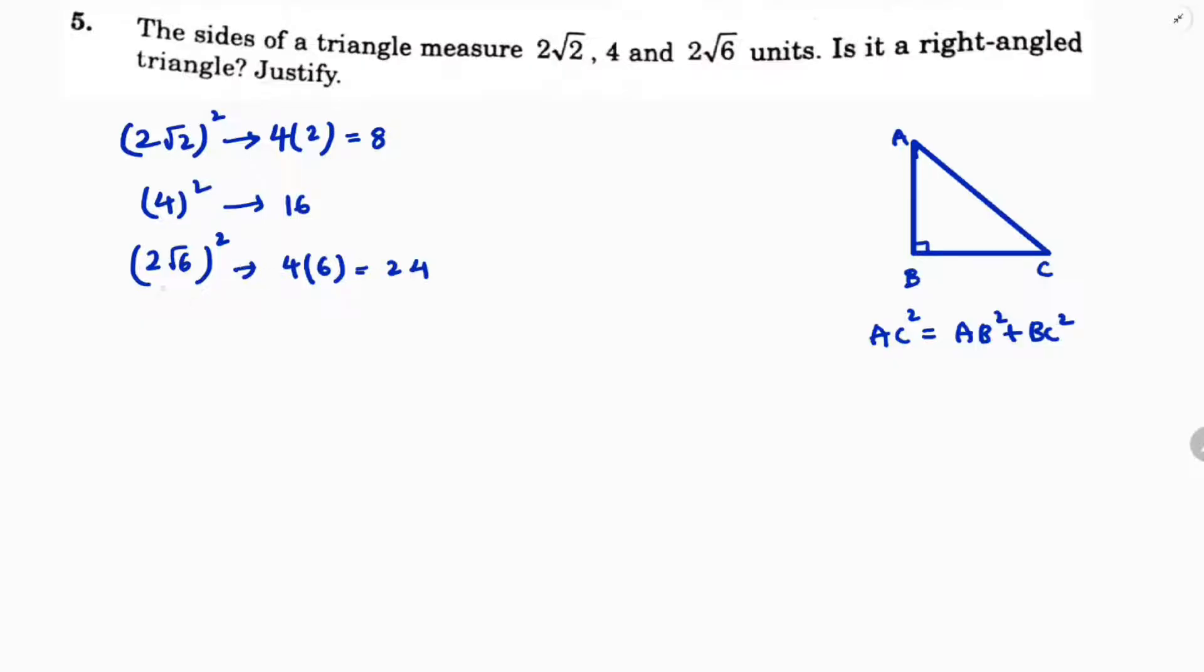So here see, the longest side is 2√6. If I replace hypotenuse with 24, the other two sides you can write as 8 and 16. These are the two sides after squaring.